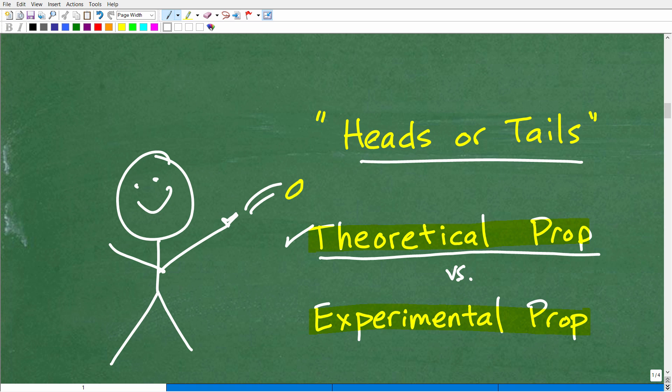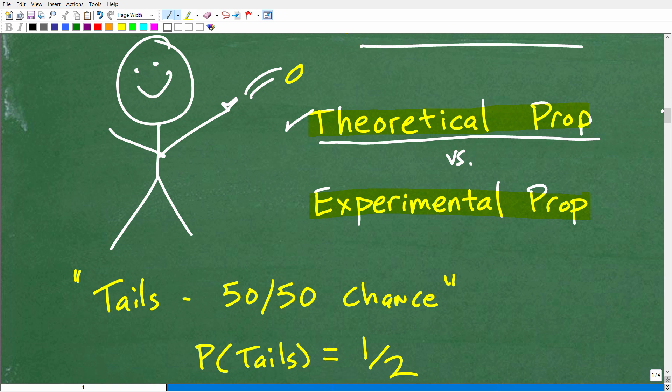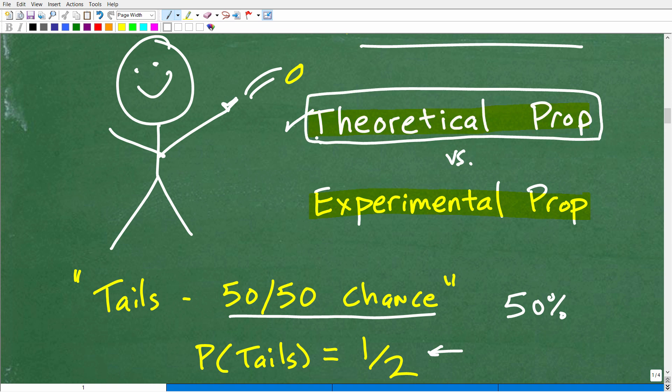So, what we've been talking about so far is theoretical probability. All right. So, let's go back to our heads or tails, our little quarter here. And, again, let's look at the probability of getting tails. So, most people are going to say, okay, what's the probability of getting tails? Well, you have a 50-50 chance or one-half or 50%. We kind of covered that. But what we really were doing there is using theoretical probability. It's what we expect to happen from a mathematical standpoint.